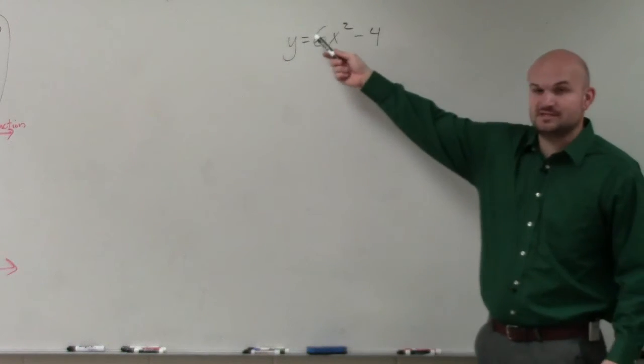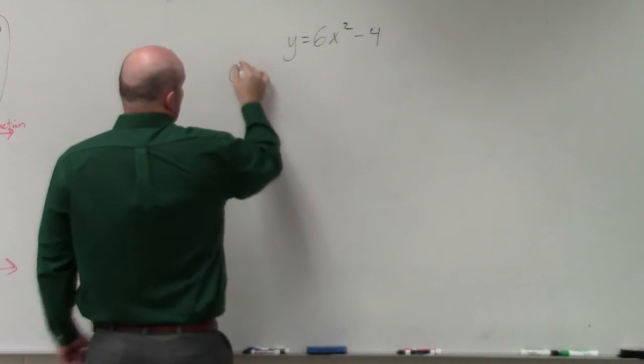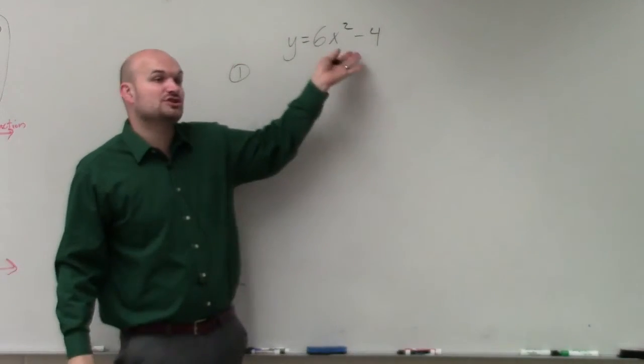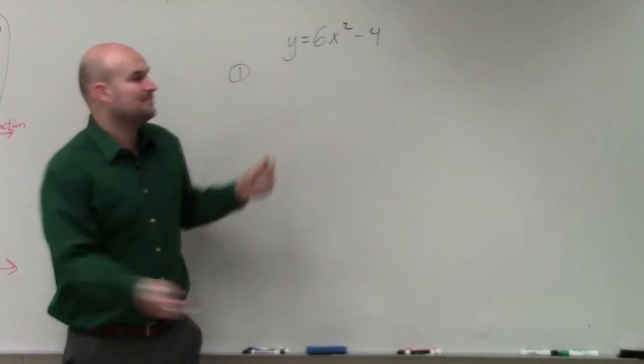First thing was always just write this as y. Then the next step was to swap. So if you have this instead of a function like f of x, we replaced f of x with y. The next step was to swap your x and y variable.